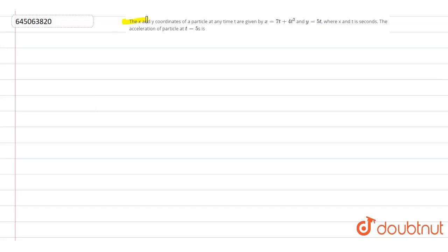The given question is: the x and y coordinates of a particle at any time t are given by x is equal to 7t plus 4t square and y is equal to 5t, where x and t is seconds. The acceleration of particle at t is equal to 5 seconds is. Let's solve this question.